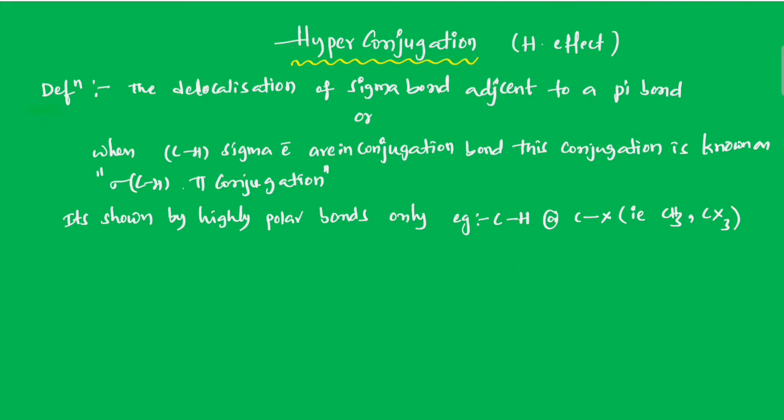What does hyperconjugation mean? The delocalization of sigma bond adjacent to pi bond is called hyperconjugation. When CH sigma electrons are in conjugation with a pi bond, this is known as sigma CH pi conjugation.